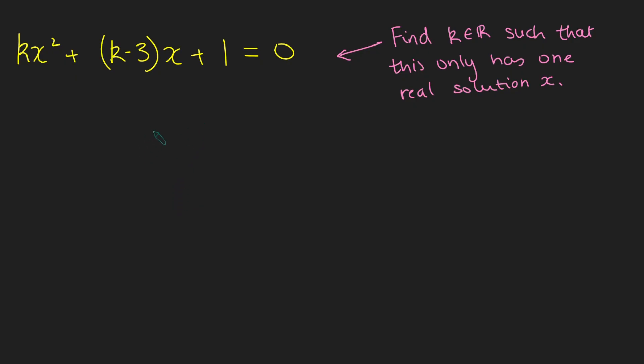Okay, so what most A-level students would do is they look at this and go, we've got a quadratic, we need to look at the discriminant, and because we only have one real solution, we need to make this 0. So that's what we're going to start by doing.